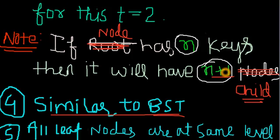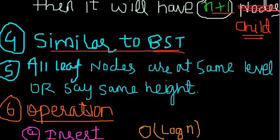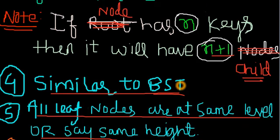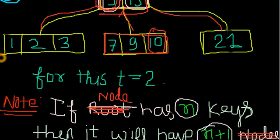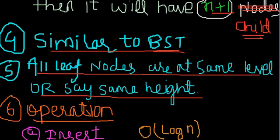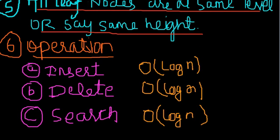All leaf nodes are at the same level, or same height. This is a must condition in B-trees. What is a leaf node? The lowest node that the tree has. They all should be at the same level. This is the must condition.